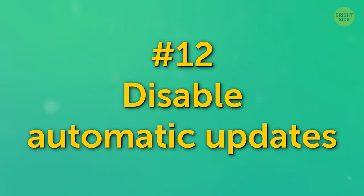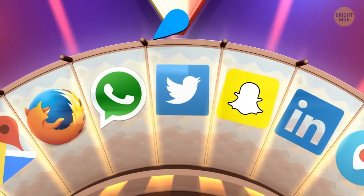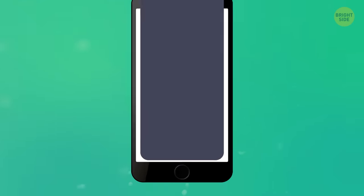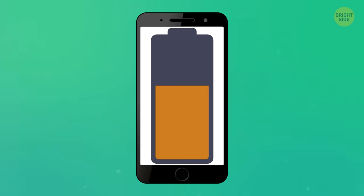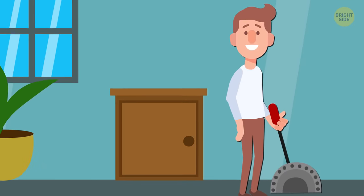Number 12. Disable automatic updates. Many apps will automatically update as soon as there is a new version available. This isn't as big a power waster as some things on this list, but you'll want to turn it off if you're trying to get the most out of your battery.